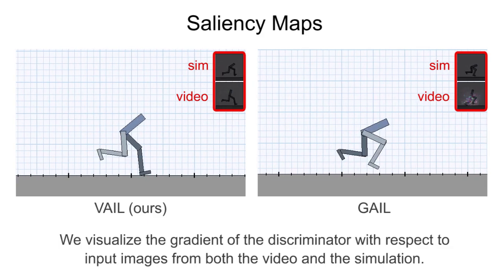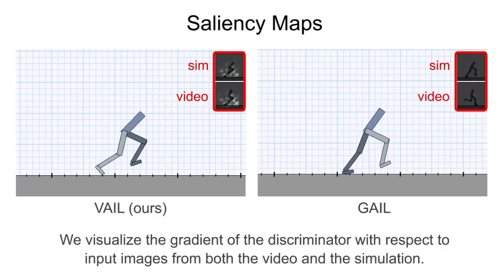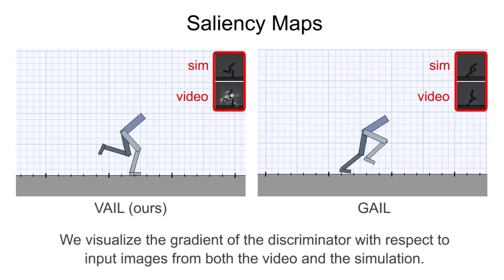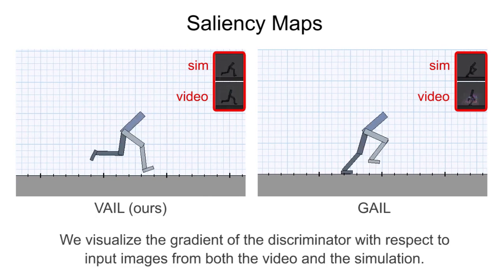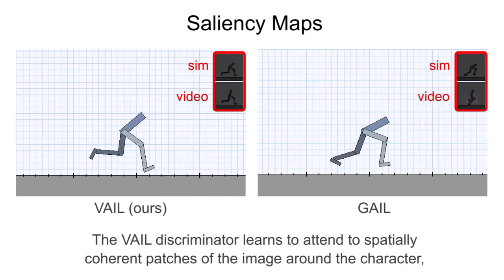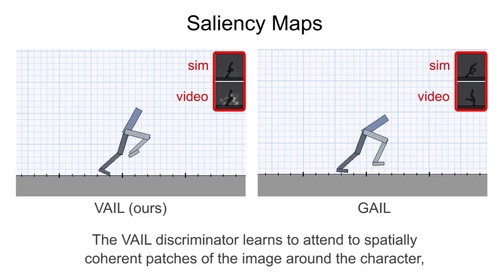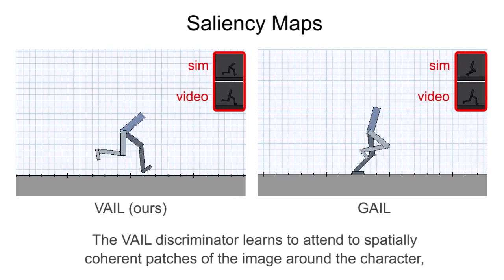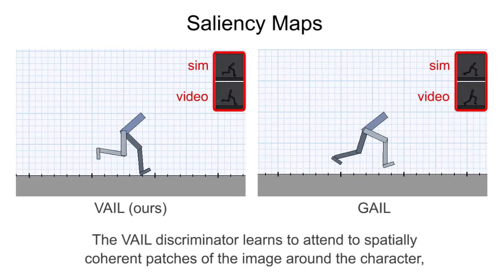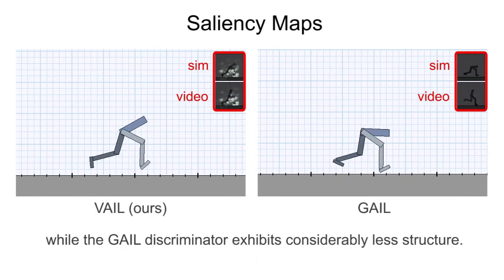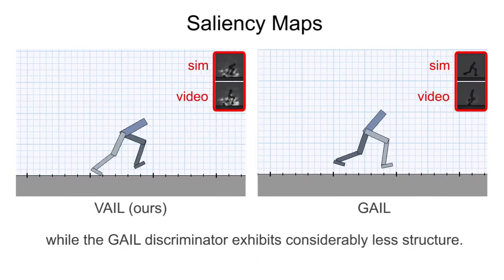We visualize the gradient of the discriminator with respect to input images from both the video and the simulation. The VAIL discriminator learns to attend to spatially coherent patches of the image around the character, while the GAIL discriminator exhibits considerably less structure.